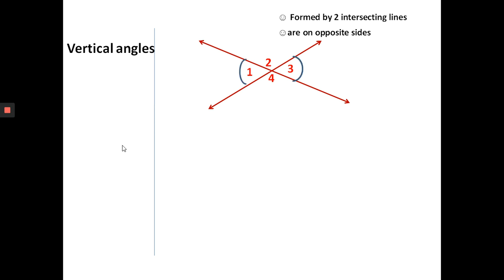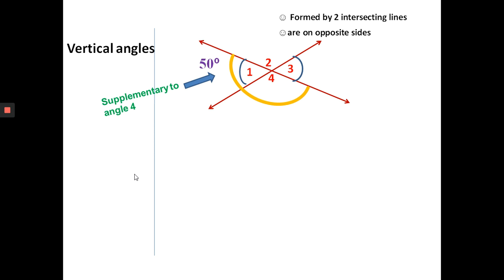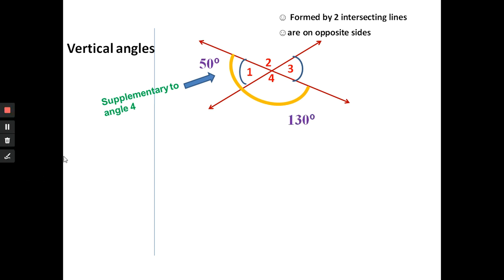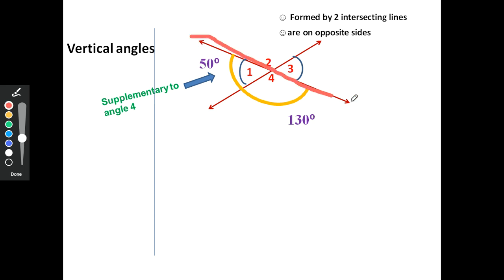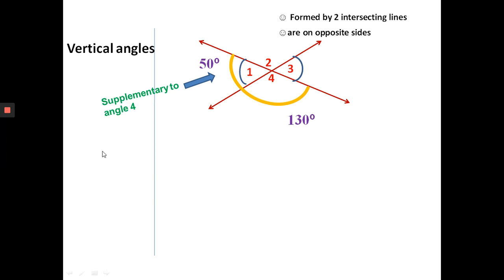When I look at angle one and angle three, angle one and angle four are supplementary — they add up to 180 degrees; that's a straight angle. So if angle one is 50 degrees, angle four must be 130 degrees because they add up to 180 degrees. That straight line is 180 degrees. Now, angle three is also supplementary to angle four, so angle three and angle four also add up to 180 degrees.